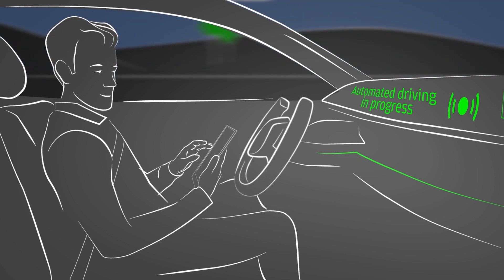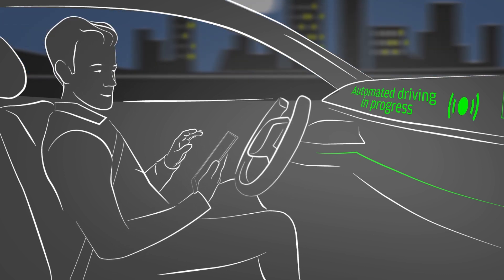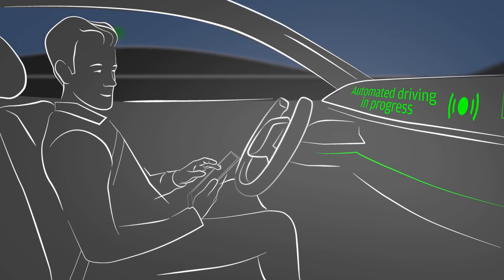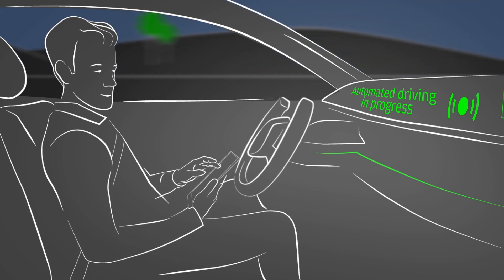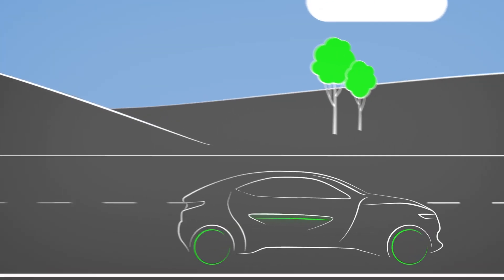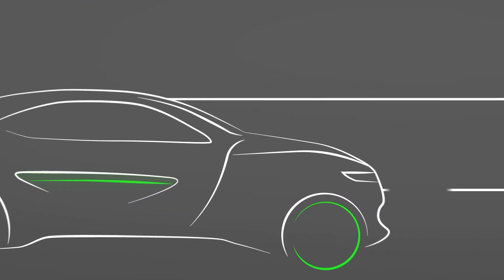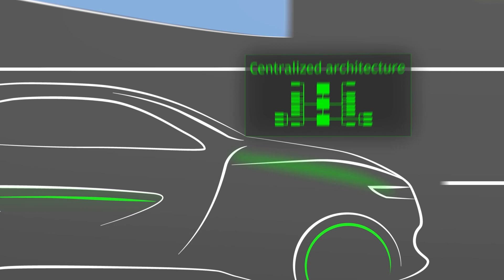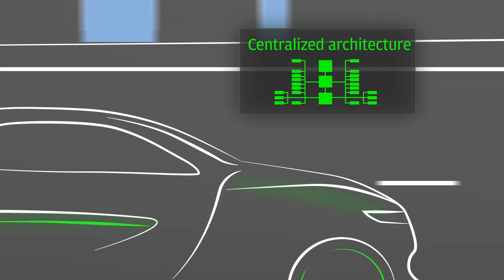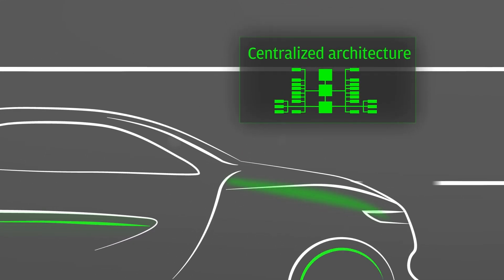Mega trends such as automated driving, connected car, smart devices, and e-mobility are on the rise, requiring scalable in-vehicle software architectures. Automated driving demands dependable systems with more computing power, and solutions for fail-operational systems are required.